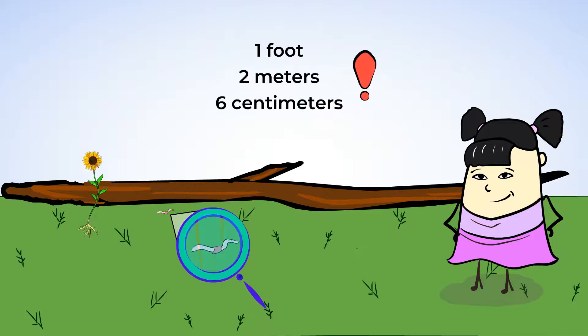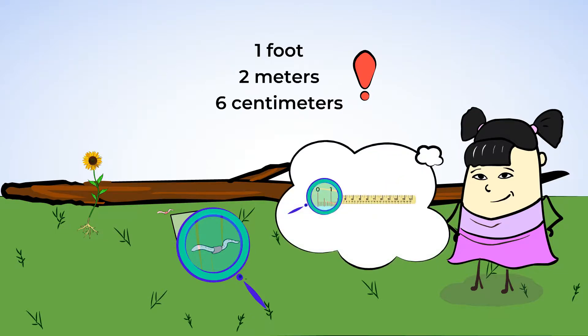First, we know that a centimeter is a really small unit. We know a ruler has 1 foot on it, and can also fit about 30 centimeters. So 6 centimeters is pretty small. It's definitely smaller than a foot. It's a good estimate that the earthworm is 6 centimeters.